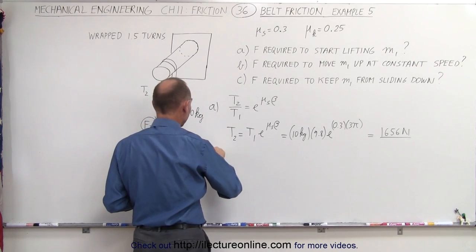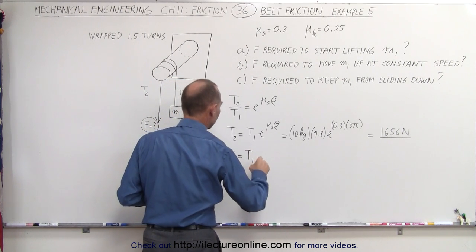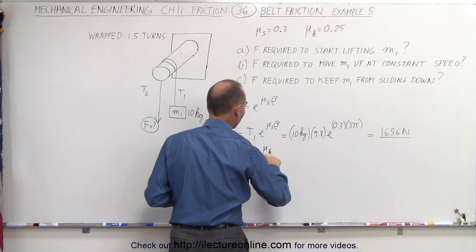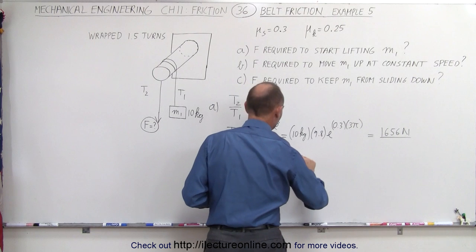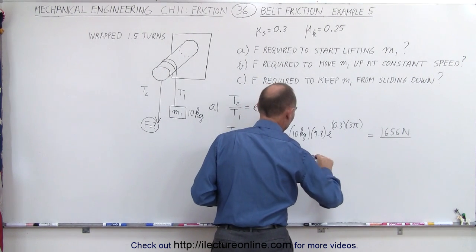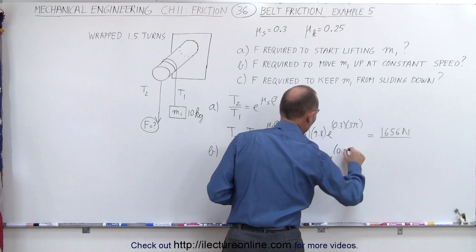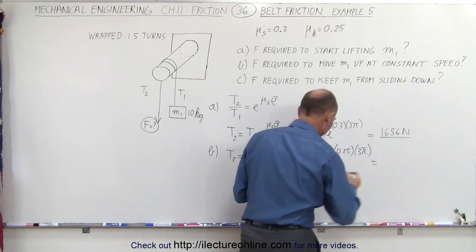So for part B, we have T2 is equal to T1 times e to the mu sub k. Now we use a coefficient of kinetic friction times beta. So this becomes 10 times 9.8 times e to the 0.25 instead of 0.3 times still 1.5 times wrapped around.